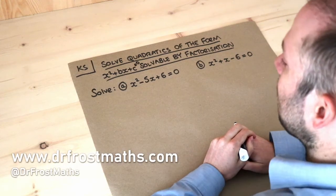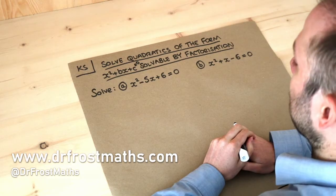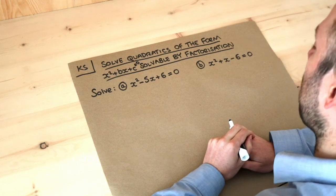Hello and welcome to this Dr. Ross Math key skill video on solving quadratics of the form x squared plus bx plus c equals zero, solvable by factorization.